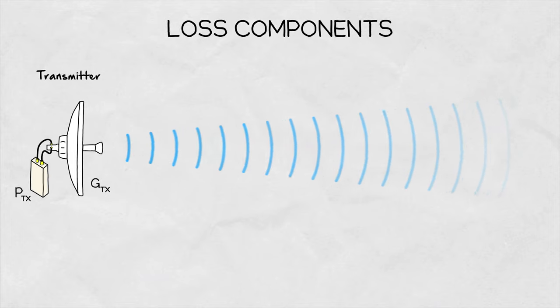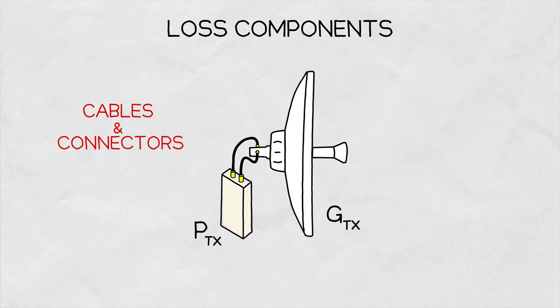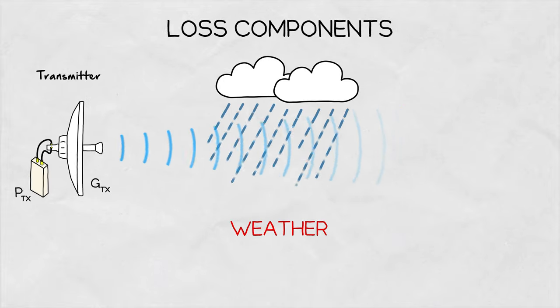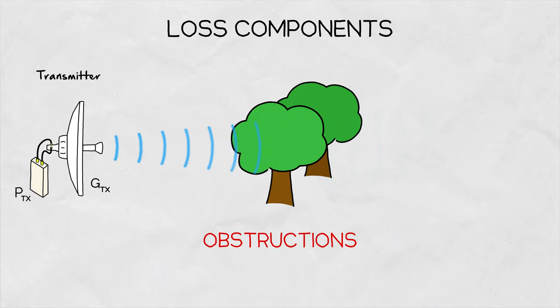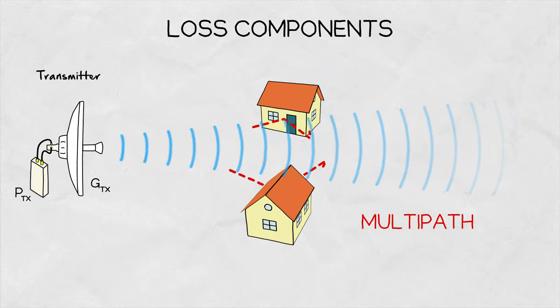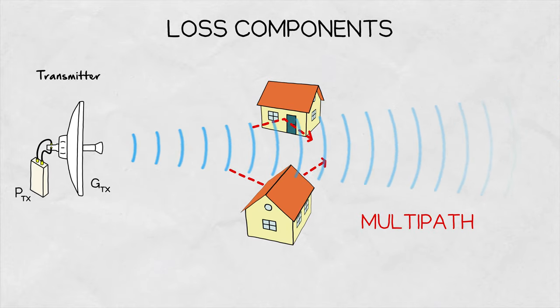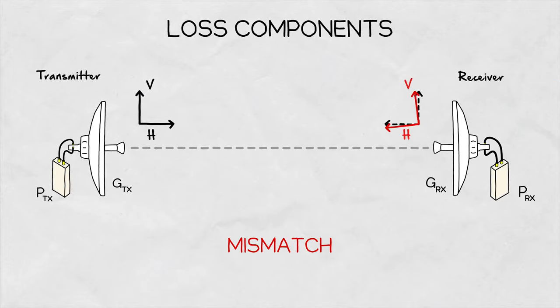Besides path loss, there are many other components that can add to power loss. Cable and connector loss and reflections. Atmospheric loss due to changing weather conditions. Obstructions such as trees and buildings. And multi-path reflections from all kinds of surfaces. And polarization mismatching occurring when antennas are not perfectly aligned and so on.